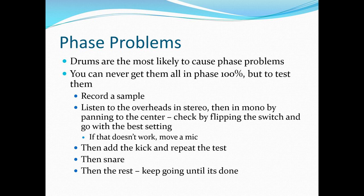In terms of phase problems, the drums are the most likely to cause them, simply because when you're recording a drum kit, you're probably using more mics than anywhere else in your setup. Because of how the kit is structured, you can never get them all 100% in phase. To test phase with drums, record a sample. Listen to any overhead mics in stereo, then in mono by panning to the center, and check by flipping the phase switch — go with whichever works best. If they're still phasing, move a mic. Then add the kick and repeat the test: pan everything to center, flip the phase inversion switch, and figure out if inversion on or off is best. Then do the snare, then the rest, until the entire kit is as good as you can make it.